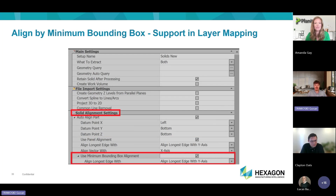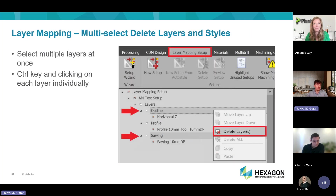The minimal bounding box feature we covered at the part level has also been added in Automation Manager in the layer mapping setup. Similarly, just as you can select multiple operations at once, you can now select multiple layers at once — useful for deleting any layers you don't need. Remember, when doing this you must hold down the Control key, not the Shift key, or it won't work.